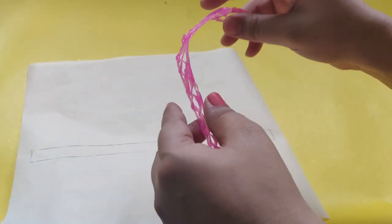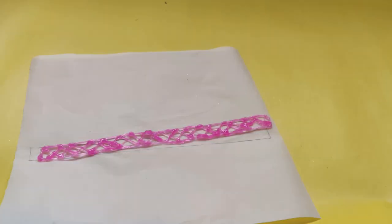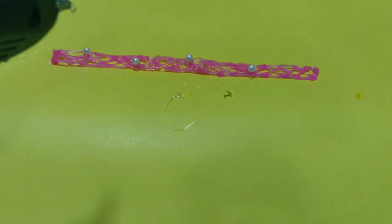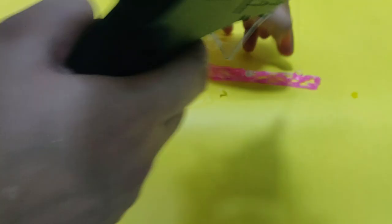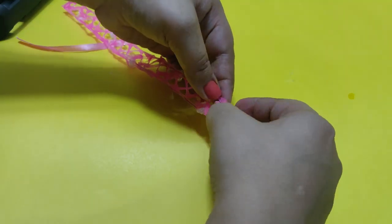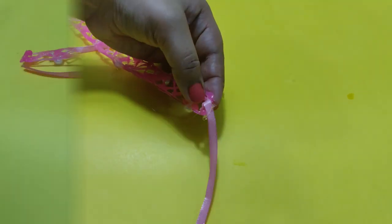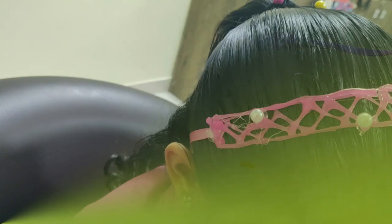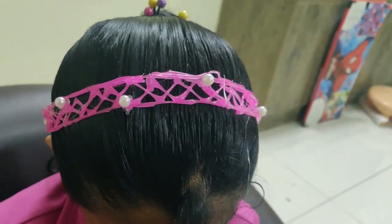I will put pearl beads on the headband. Then I will cut two pieces of ribbon and stick them on the headband as well. Finally, this is the completed headband.